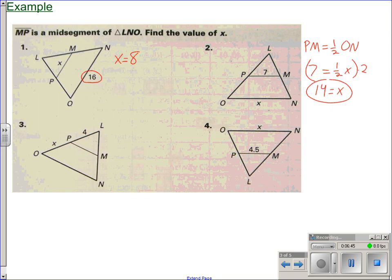Number three, MP was a midsegment. That means both M and P are midpoints. So that means LP and OP are the same. So that means X has got to be 4.